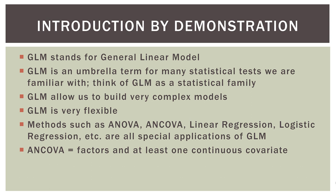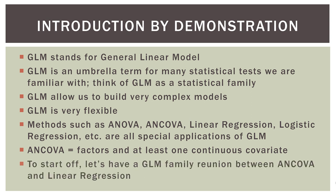ANCOVA is different than ANOVA in that it contains factors, which is what we have in ANOVA, and at least one continuous covariate — that's what makes it ANCOVA. So to start off, let's have a GLM family reunion between ANCOVA and linear regression. Let's go into Excel and explore that.